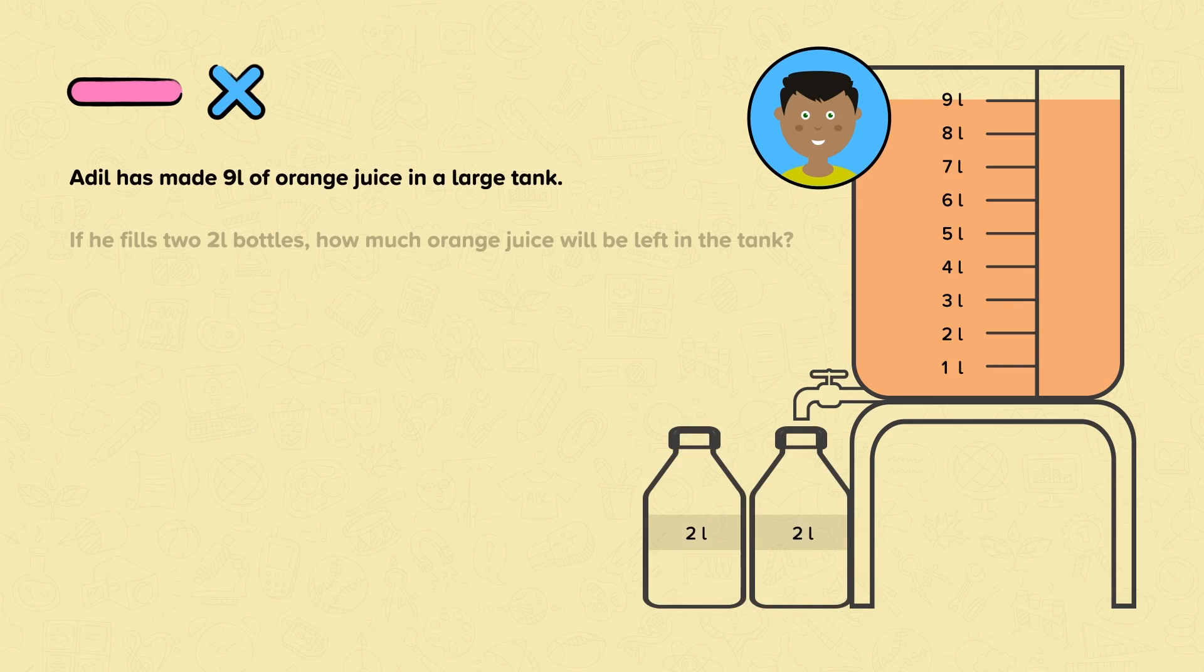Now, how about if Adil filled up two 2 liter bottles instead? How much orange juice would be left in the tank? Two lots of 2 liters equals 4 liters. So if there is 9 liters in Adil's tank and he empties 4 liters to fill the bottles, how much would be left in the tank? Well done if you knew that 9 liters subtract 4 liters equals 5 liters.